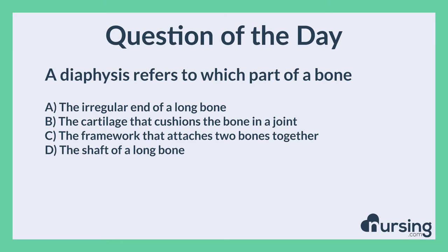Again, a diaphysis refers to which part of a bone? A. The irregular end of a long bone. B. The cartilage that cushions the bone in a joint. C. The framework that attaches two bones together. D. The shaft of a long bone.